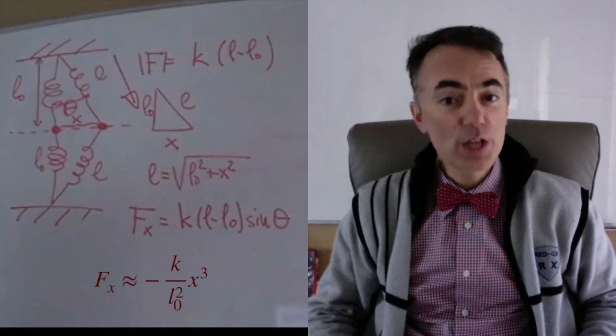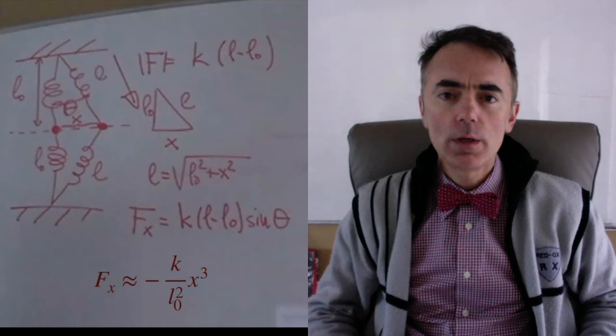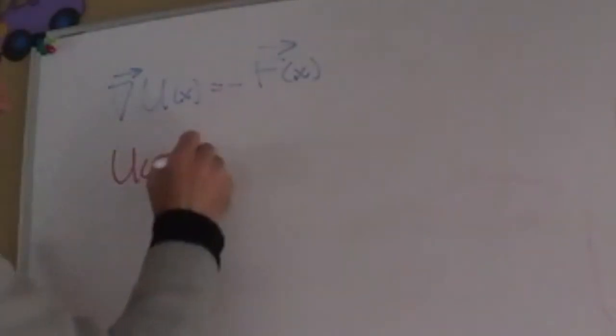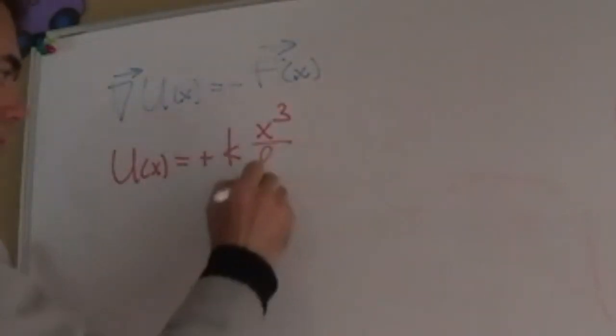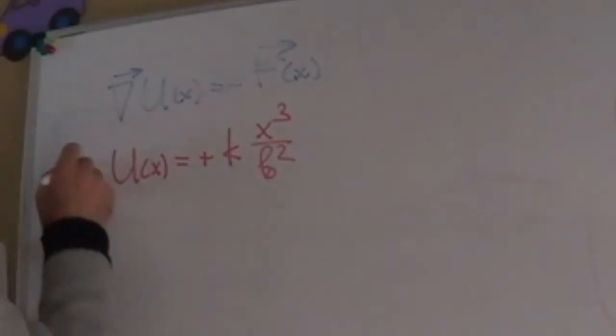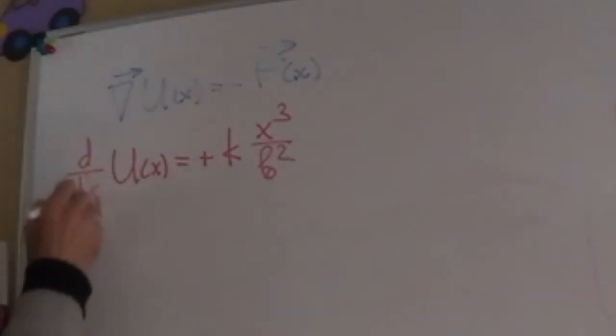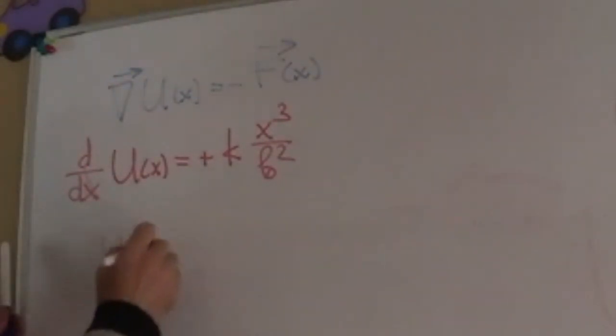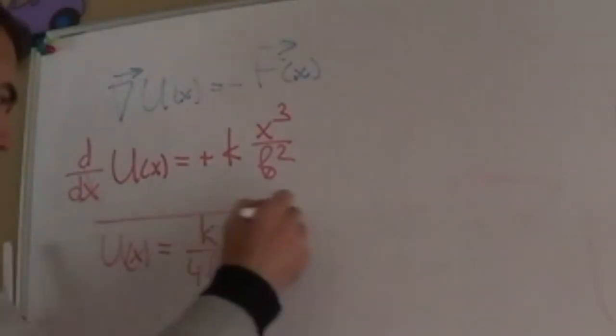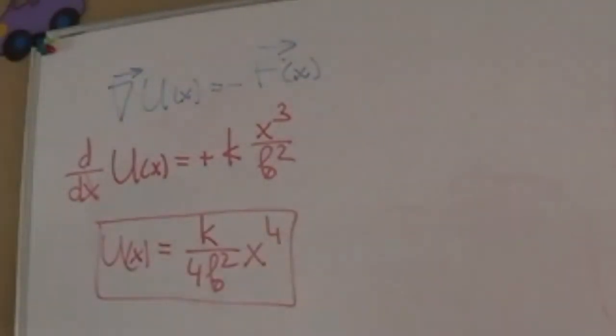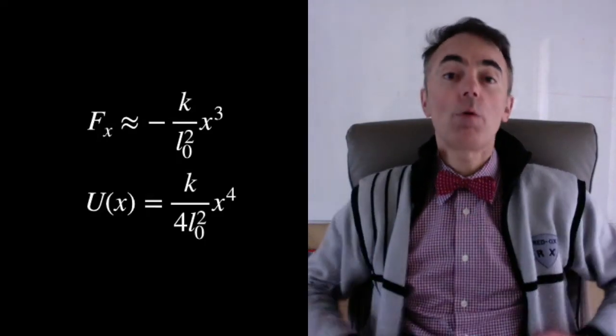We can find the potential related to this force. Using nabla of u equal to negative the force, we integrate to get the potential. And it has a dependence of x to the power of 4. This is not a parabolic potential anymore.